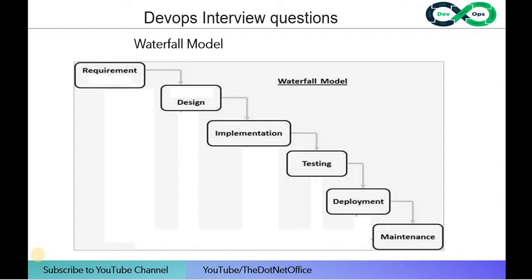In the testing phase, if the tester finds a problem, it gets sent back to the developer. This is very risky and challenging because changing requirements at that late stage is difficult. That is the biggest drawback of the waterfall model. Also, if it passes testing but fails in production during deployment and maintenance, it causes a big problem.